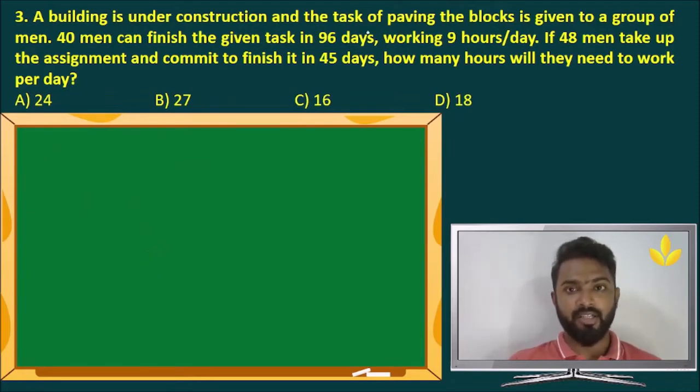A building is under construction and the task of paving the blocks is given to a group of men. 40 men can finish the given task in 96 days working 9 hours a day. If 48 men take up the assignment and commit to finish it in 45 days, how many hours will they need to work per day? So we have M1 is 40 men, T1 is 96 days, but they work for only 9 hours per day divided by W1 equals.